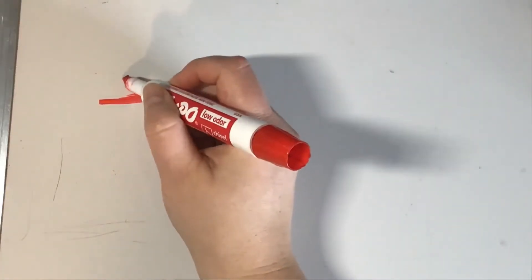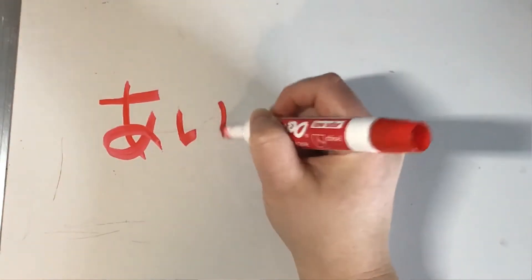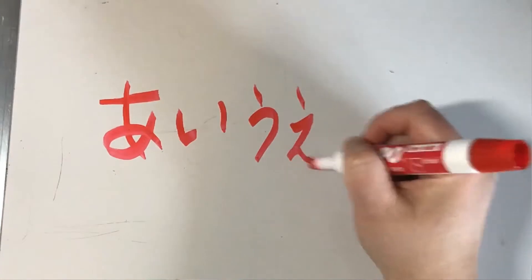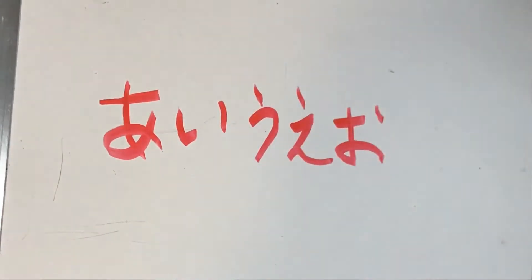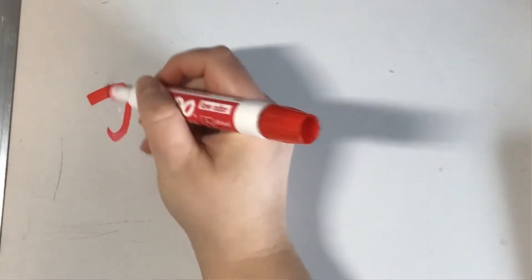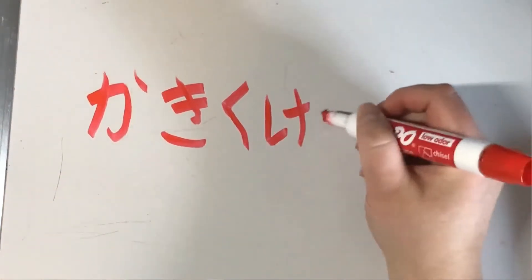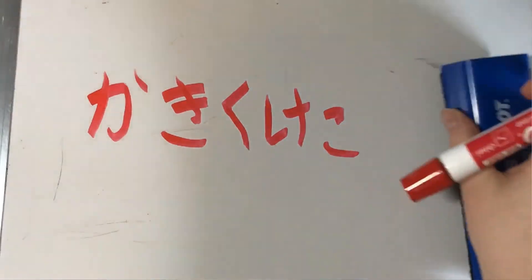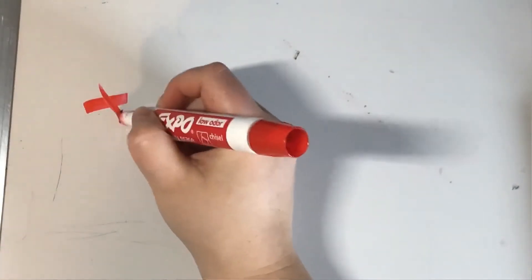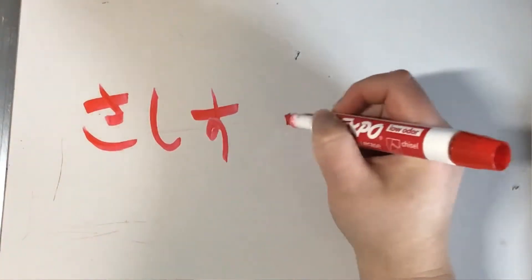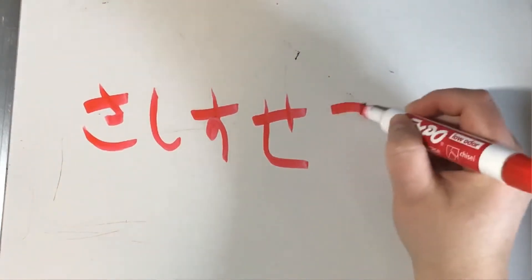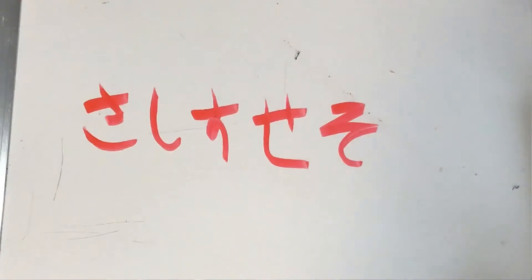So we'll start with a, i, u, e, o. Then ka, ki, ku, ke, ko, sa, shi, su, se, and so. Just a friendly reminder of those ones, and now we'll get into the next 15 characters.